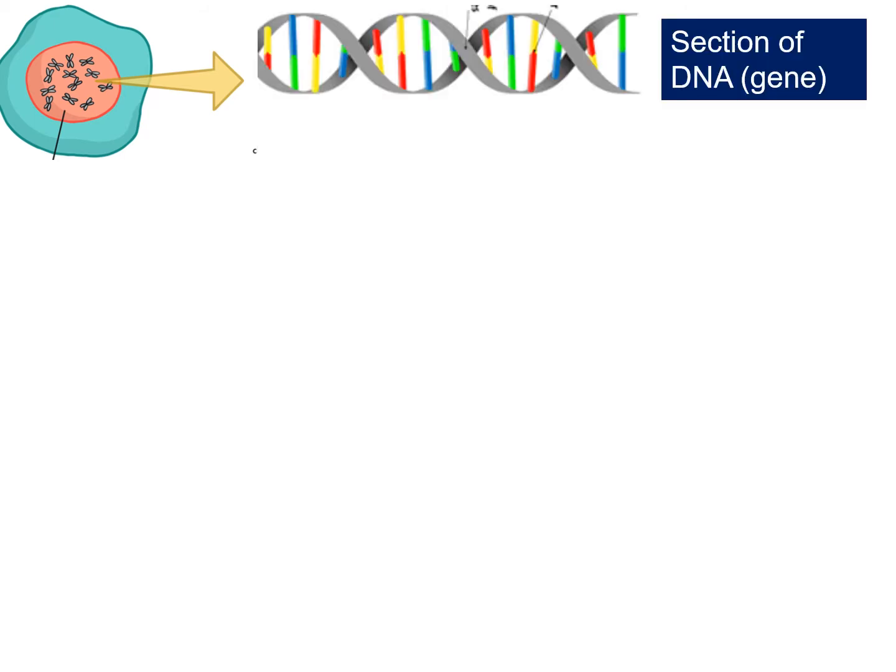So how do we synthesize or make proteins? First of all, we're going to draw our attention to the nucleus of the cell, which is where the DNA is stored. Inside the nucleus, we take our DNA strand — our section of DNA called a gene. Now, DNA is a really important molecule. We don't want to damage it in any way. So instead of making a protein directly from the gene, we first make a template strand, and that template strand is made of a molecule called RNA.